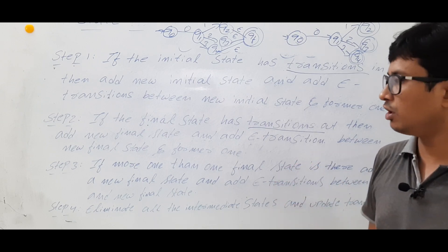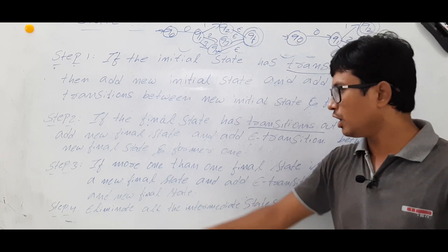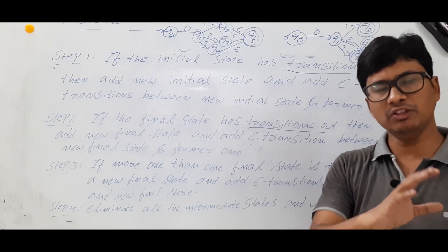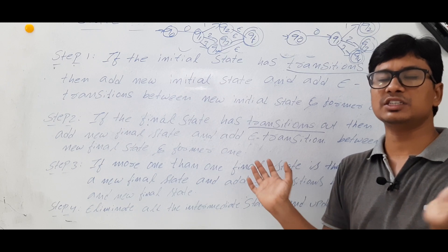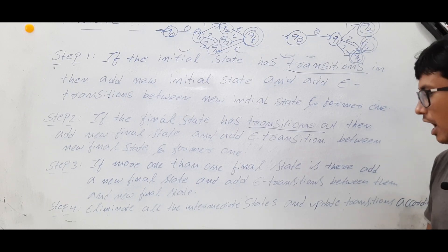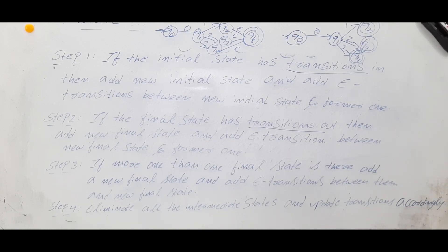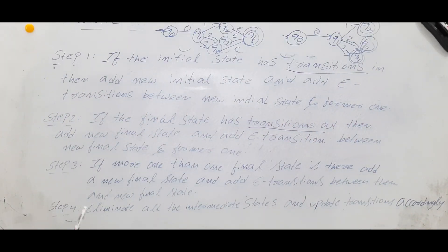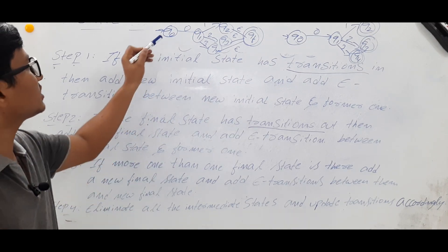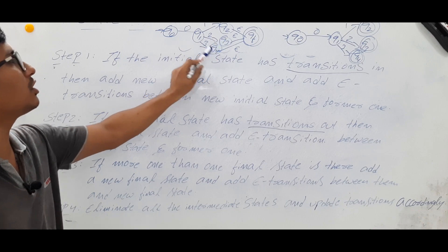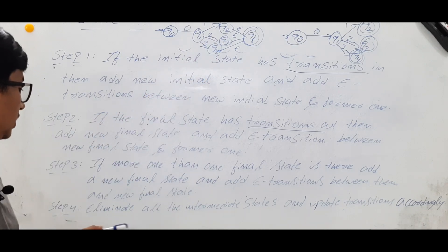Step four: eliminate all the intermediate states. What are intermediate states? Leave the initial state and final state — whatever states are in between those, eliminate them and update the transitions accordingly. For example, if your initial state and final state are there, then q1, q2, q3, q4 in between are intermediate states, and we will eliminate all of them.